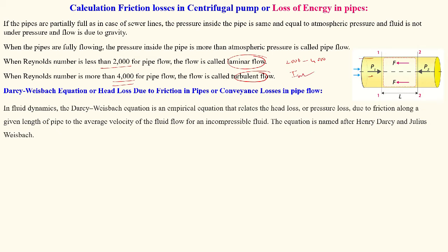Looking at the pipe cross-section, there is pressure P1 at section one and P2 at section two. Water is flowing in this direction. At the edge of the wall, there is higher friction, where the velocity is very low, and this friction creates an opposing force on the flow. The friction force acts opposite to the flow direction for the given length between sections one and two.